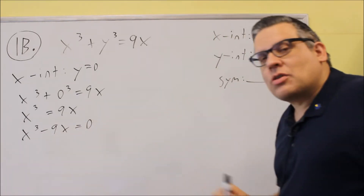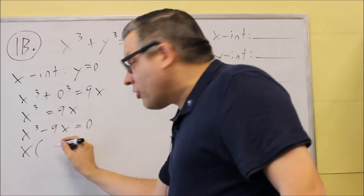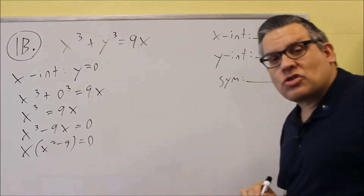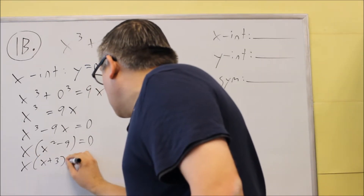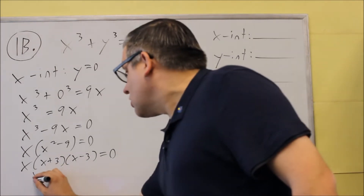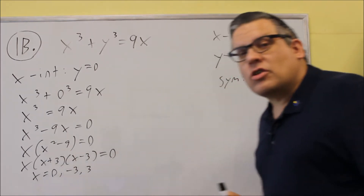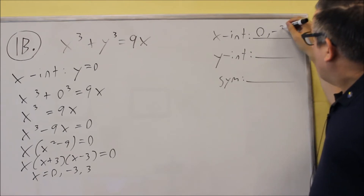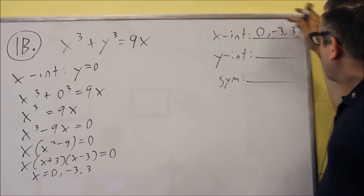The correct way is to subtract and set it equal to 0. You want to factor out an x, since it's a common factor for both terms, giving you x times (x squared minus 9). That's a difference of squares, so you can factor one more time to get x times (x plus 3) times (x minus 3). Setting each factor equal to 0 gives three x-intercepts: 0, negative 3, and positive 3.